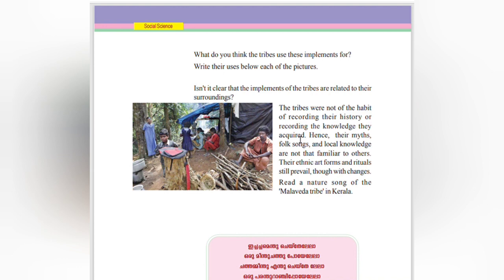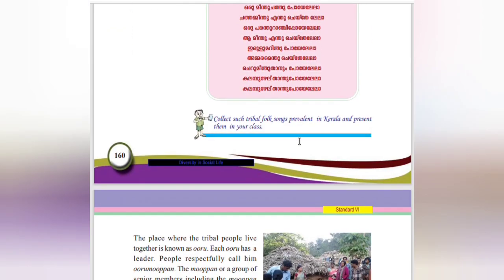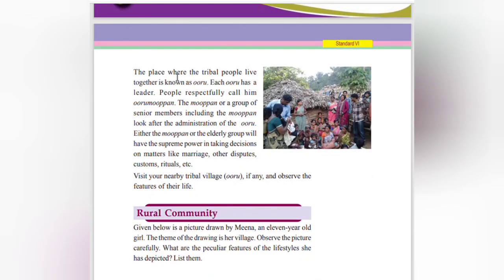Read a nature song of the Malave tribe in Kerala. The place where tribal people live together is known as the Uru. Each Uru has a leader. People respectfully call him Uru Mopan. The Uru Mopan, or a group of senior members including the Mopan, look after the administration of the Uru. He is the head or administrator of that tribal area.